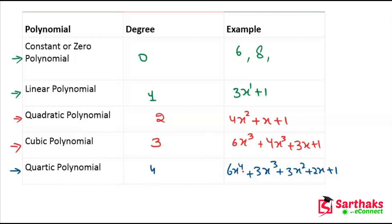For a quartic polynomial, the maximum exponent is 4, so the degree is 4. To summarize: constant polynomial has degree 0, linear polynomial degree 1, quadratic polynomial degree 2, cubic polynomial degree 3, and quartic polynomial degree 4.